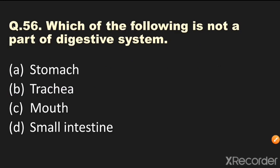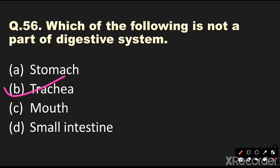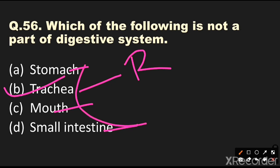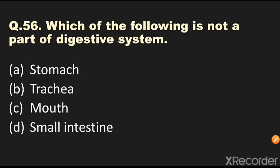Question number 56: Which of the following is not a part of the digestive system? Options are stomach, trachea, mouth, or small intestine. The answer is trachea — trachea is not part of the digestive system but is part of the respiratory system. Stomach, mouth, and small intestine are all part of the digestive system.